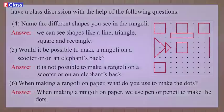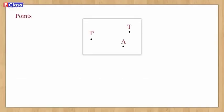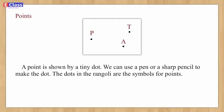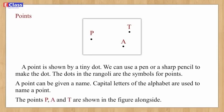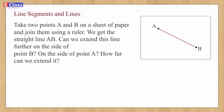Let's learn about points. A point is shown by a tiny dot. We can use a pen or a sharp pencil to make the dot. The dots in the rangoli are the symbols for points. A point can be given a name — capital letters of the alphabet are used to name a point. The points P, A, and T are shown in the figure.